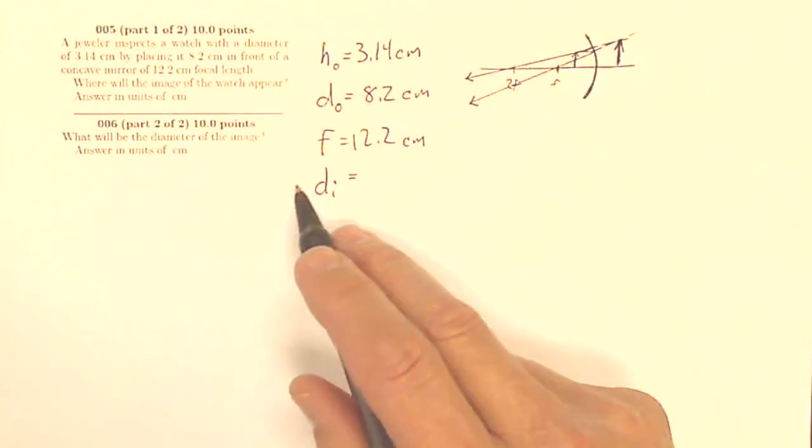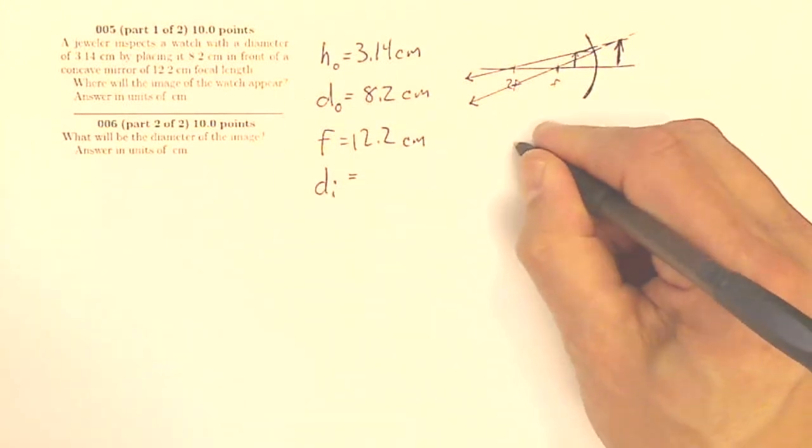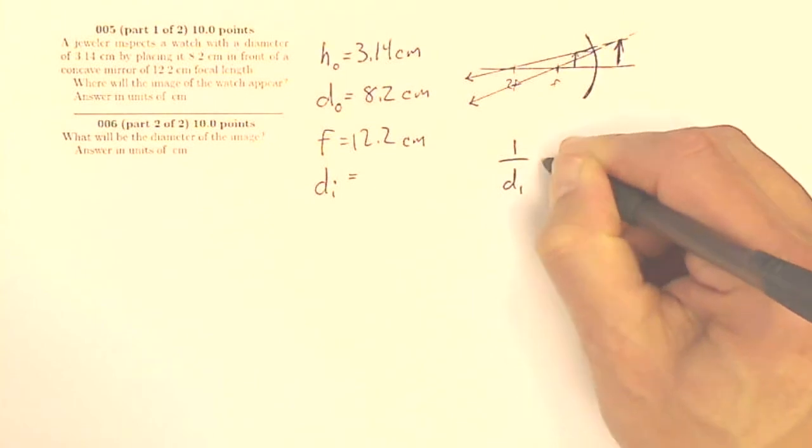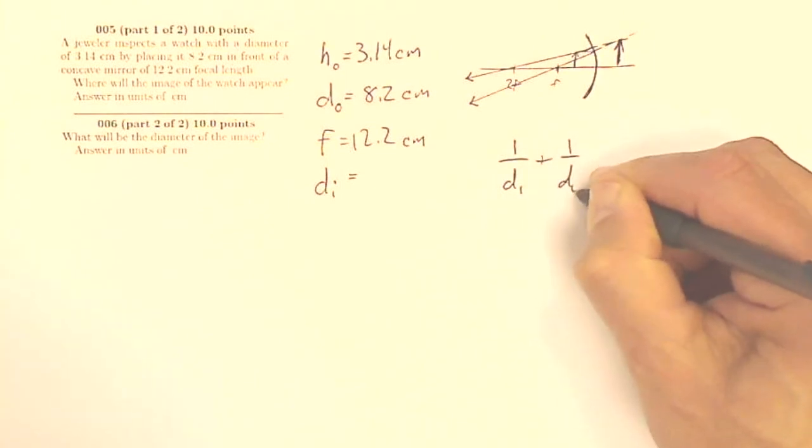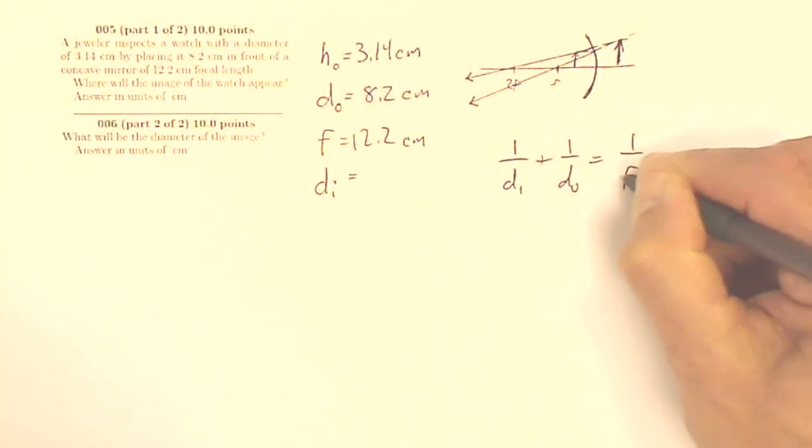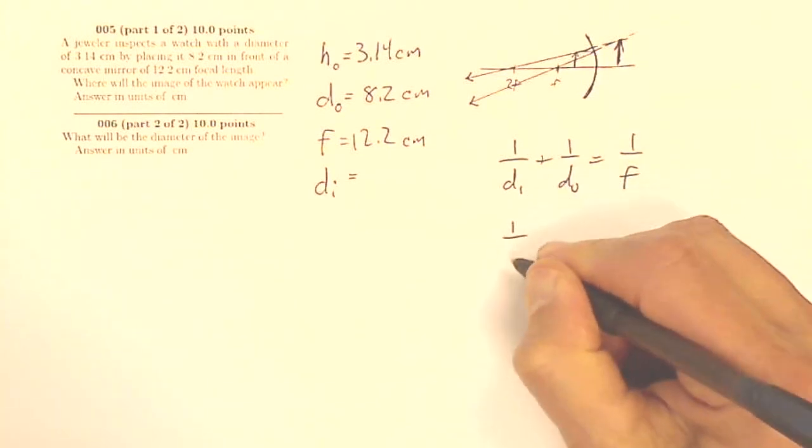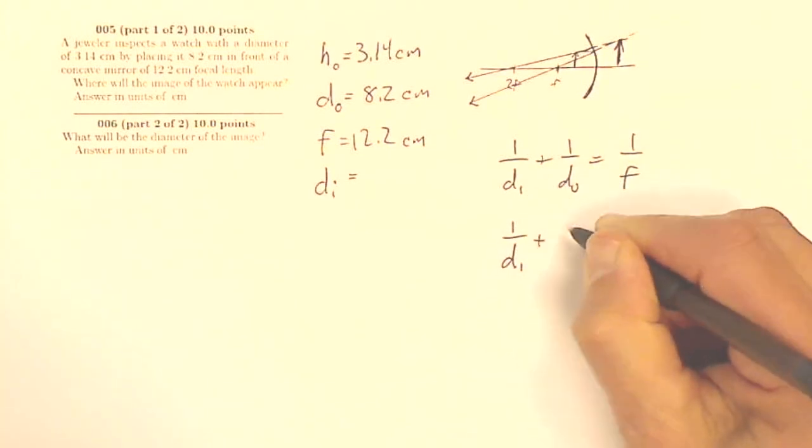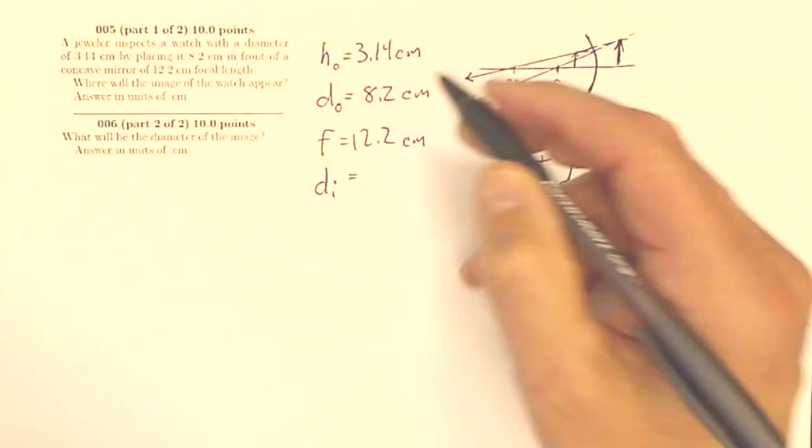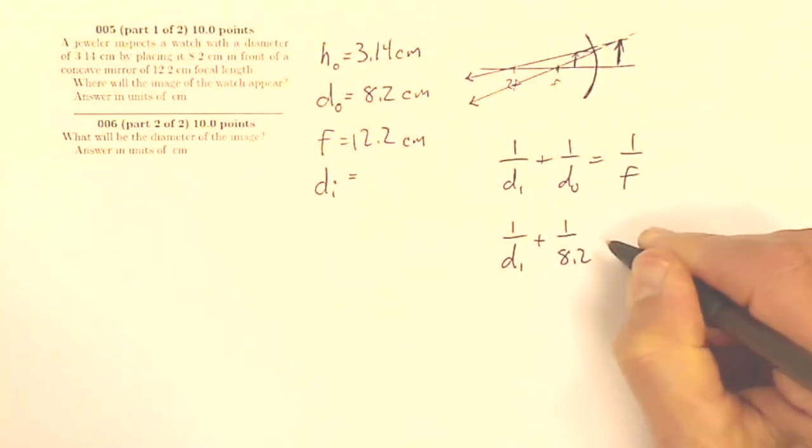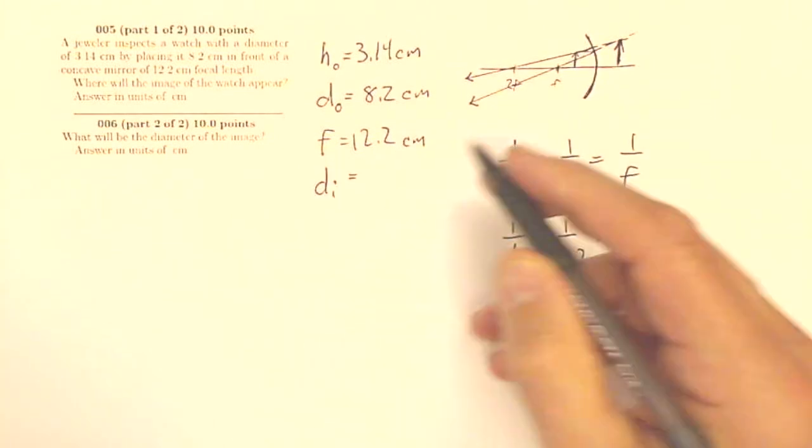So that's going to help me here. But if I just plug in my numbers, I know that 1 over di plus 1 over do equals 1 over f. So I've got 1 over di plus 1 over, for me do is 8.2, equals 1 over f of 12.2.